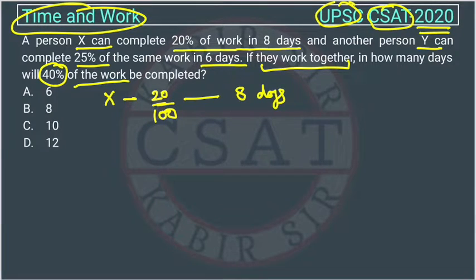So 20 by 100 work is completed in 8 days. One work will be completed in how many days? 8 into 100 by 20. So this will be 8 into 5, 8 fives are 40. So X will take 40 days to complete a work.